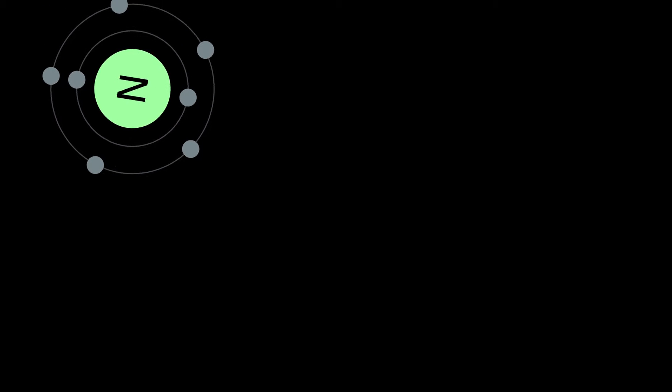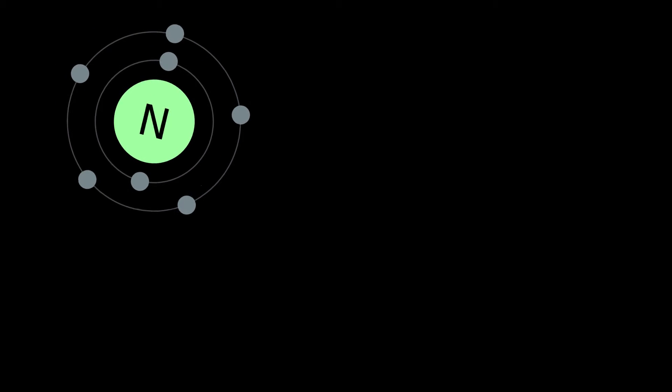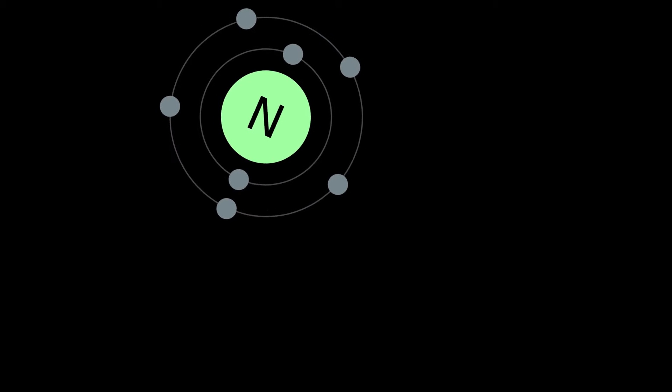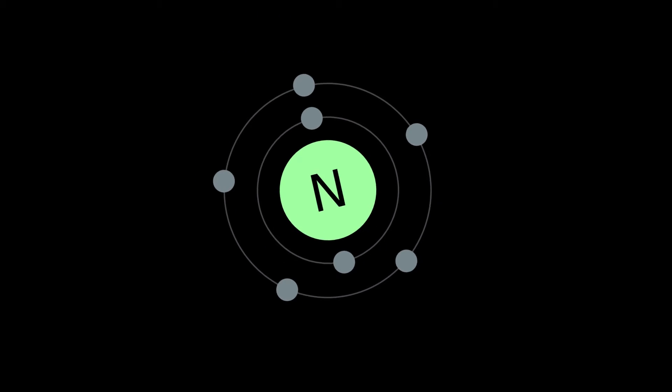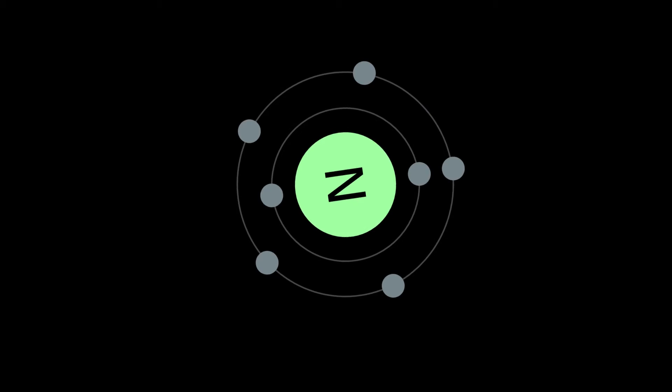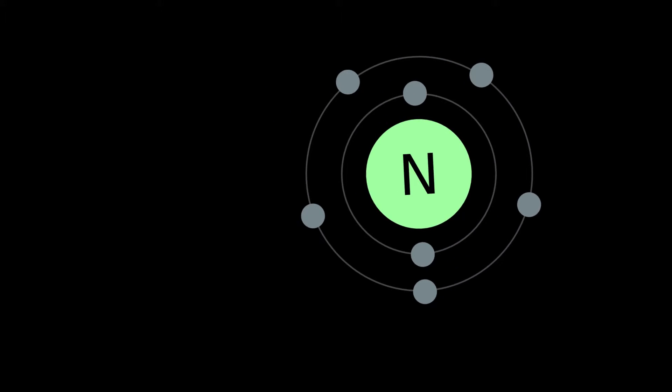On Earth, the element forms about 78% of Earth's atmosphere and is the most abundant combined element. The element nitrogen was discovered as a separable component of air by Scottish physician Daniel Rutherford in 1772.